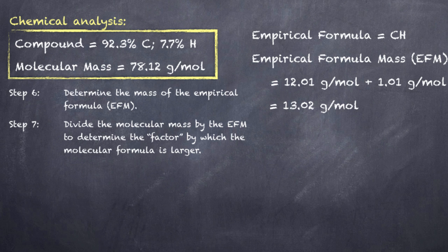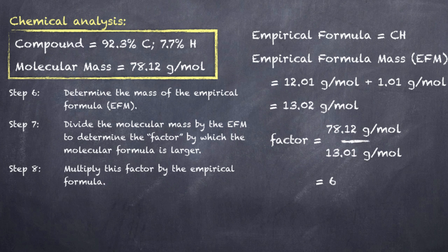Since we know the actual molecular mass of the compound is 78.12, we're going to take that 78.12 and divide it by the empirical formula mass. Because we know the two of them, that is the actual molecular formula and the empirical formula, are going to have the same ratio. It's just that the molecular formula might be two or three or four times larger because there are two or three or four times more carbon, more hydrogen in that particular compound. So in doing that calculation, we can find that the factor by which the molecular compound is larger than the empirical compound is six. So we then take this factor, multiply it by the empirical formula. And we can see here that we ultimately arrive at the molecular formula of this compound, C6H6.